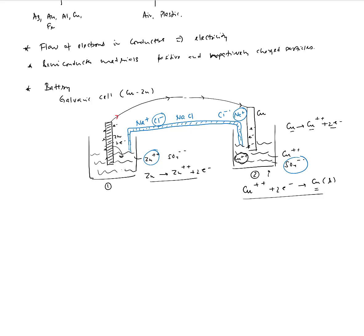The question is: what is the driving force for the electrons to travel from the zinc electrode to the copper electrode? The zinc electrode is clearly a negatively charged electrode because it has an abundance of electrons — we call this the anode, which is the technical term for a negatively charged electrode. The copper electrode, which is positively charged, is called the cathode. Anode is negatively charged and cathode is positively charged.